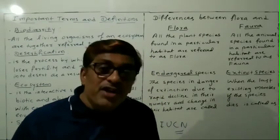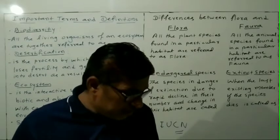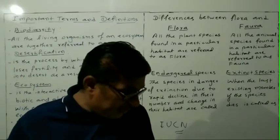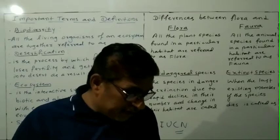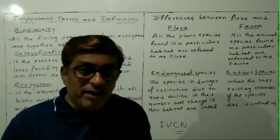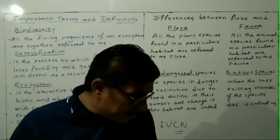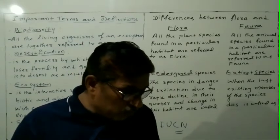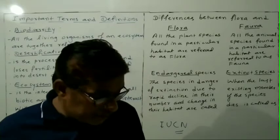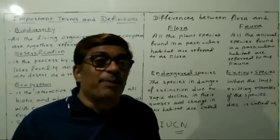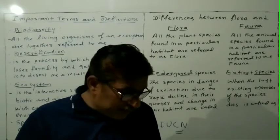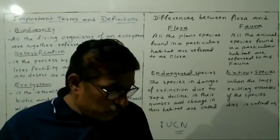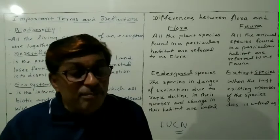Remember: The Forest Conservation Act in 1927, and Wildlife Protection Act in 1972, deal with the conservation of forests and wildlife animals respectively. The main aim of these acts is to preserve and conserve our biodiversity.